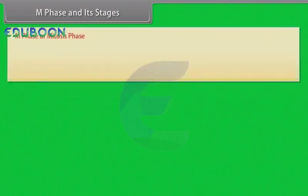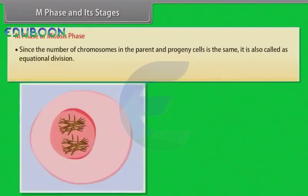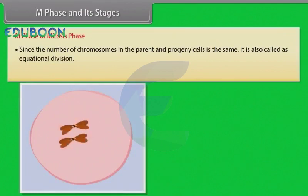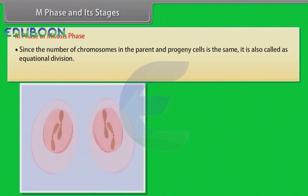M phase and its stages. M phase is also known as mitosis phase. Since the number of chromosomes in the parent and progeny cells is the same, it is also called equational division. Mitosis is divided into the following four stages: prophase, metaphase, anaphase, and telophase.